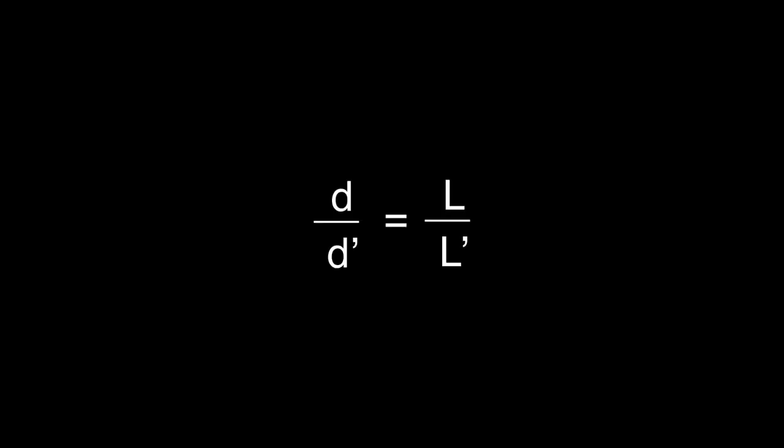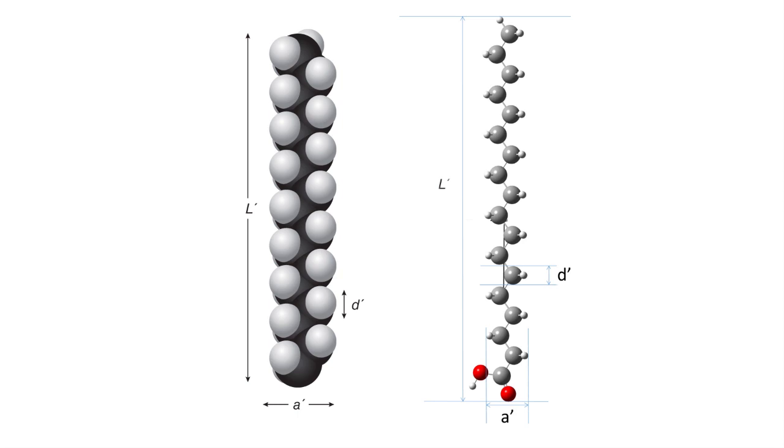Next, using proportions or the principle of similar triangles, D over D prime equals L over L prime. Calculate the diameter D of a carbon atom for both models.